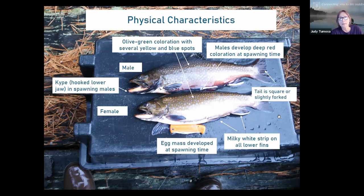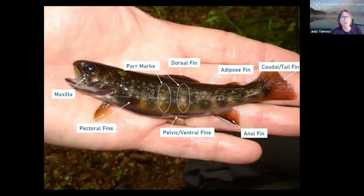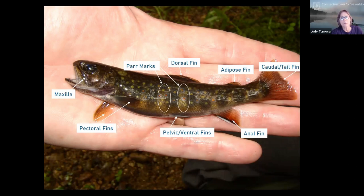The kype is the hooked jaw present in spawning males, because it's a competitive situation where males fight to get into the female's nest, or redd. It's very stressful — they're fighting to spread their genetic material, not eating, doing nothing else except spawning, so some survive and some don't. The parr marks are a way for them to camouflage and stay protected in the stream. They also have adipose fins, which cold water fish tend to have.